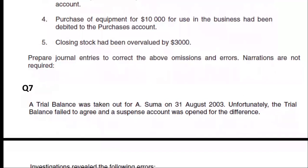The fourth entry: purchase of equipment for 10,000 for use in the business had been debited to the purchases account. We had to purchase equipment — equipment should be debited. But it was put into purchases instead. This is an error of principle — equipment is an asset; purchases is an expense. So we debit equipment and credit purchases for $10,000. Narration: 'Correction of an error — equipment bought recorded incorrectly into the purchases account.'